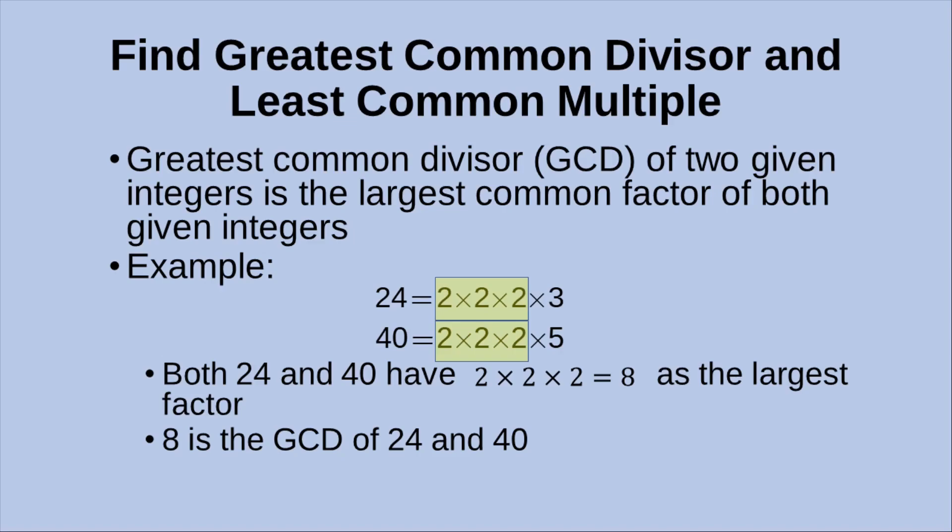For example, we can express 24 as the product of 2 × 2 × 2 × 3, and we can also represent 40 in terms of some factors like 2 × 2 × 2 × 5. We can see from these two factor lists that 2 × 2 × 2, which is equal to 8, is the largest common factor for both numbers. So in this case, we can say that 8 is the GCD of 24 and 40.